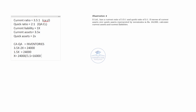Solving for x: x is equal to 24,000 divided by 1.5, which gives x equal to 16,000. Therefore, current liabilities are 16,000 and current assets are 3.5 multiplied by 16,000, which equals 56,000.